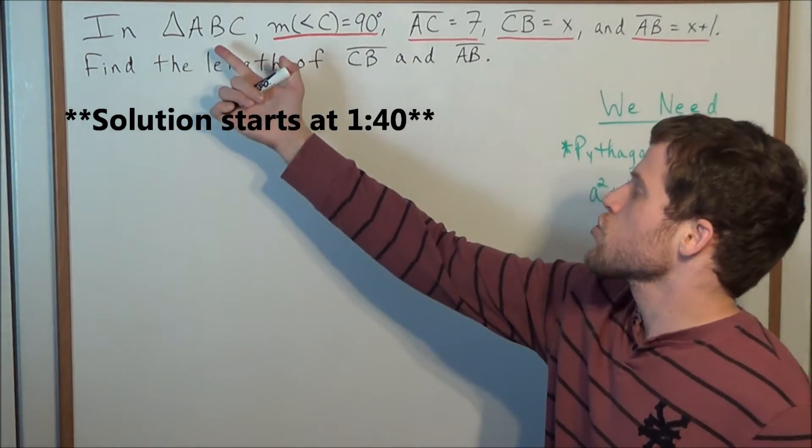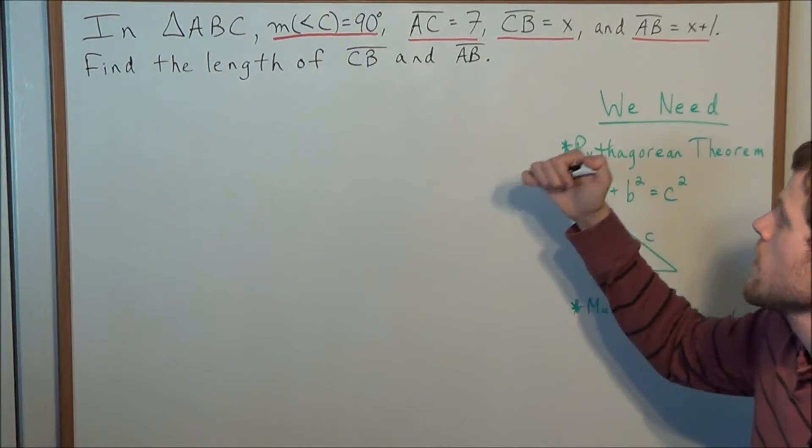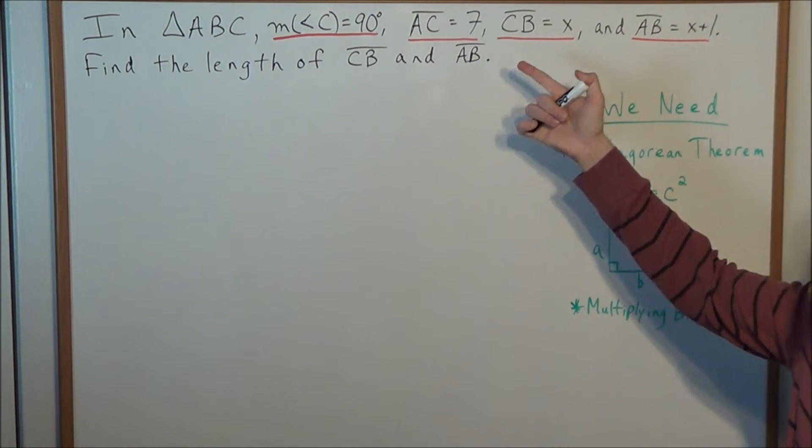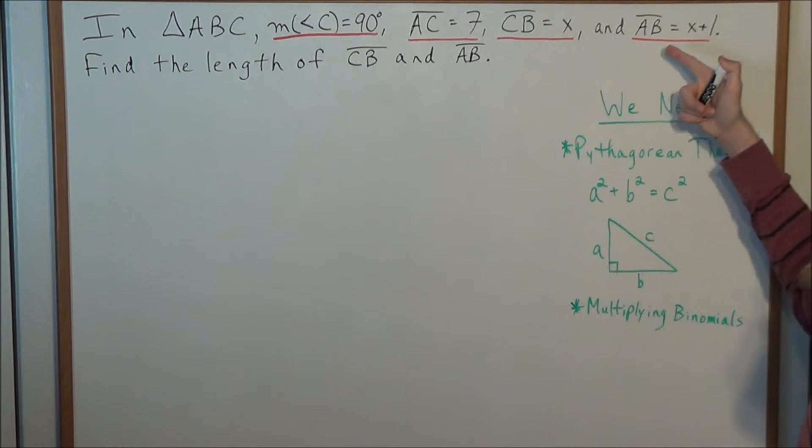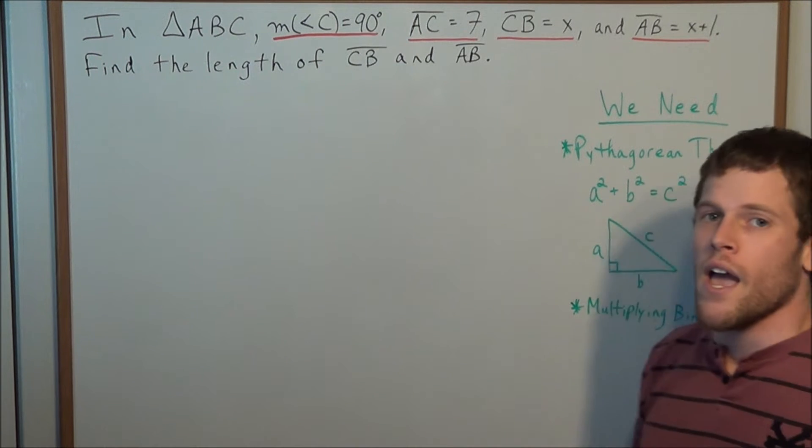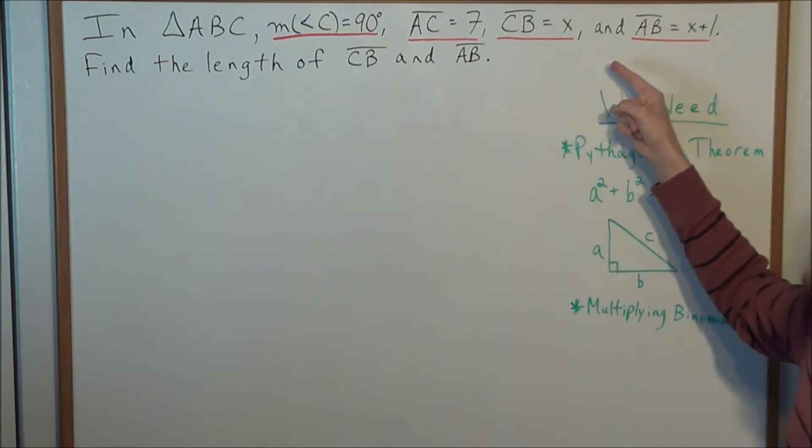So we have in triangle ABC the measure of angle C equals 90 degrees, side AC has a length of 7, the side length of CB equals X, and finally the side length of AB equals X plus 1. And now our goal is to find the length of side CB and side AB.